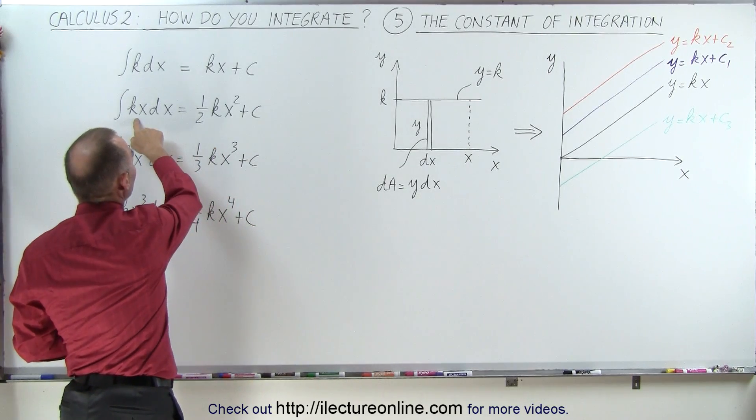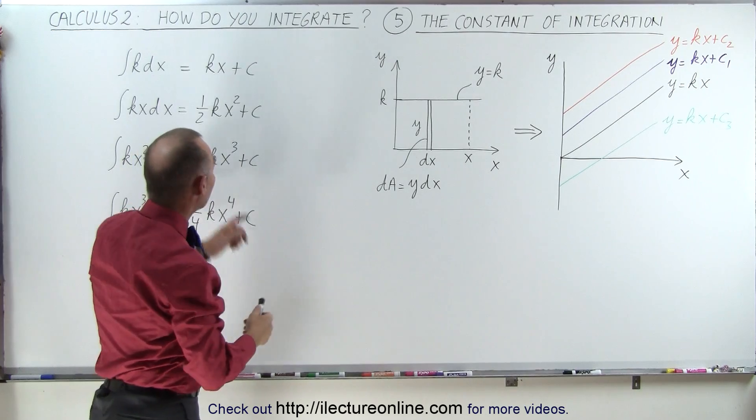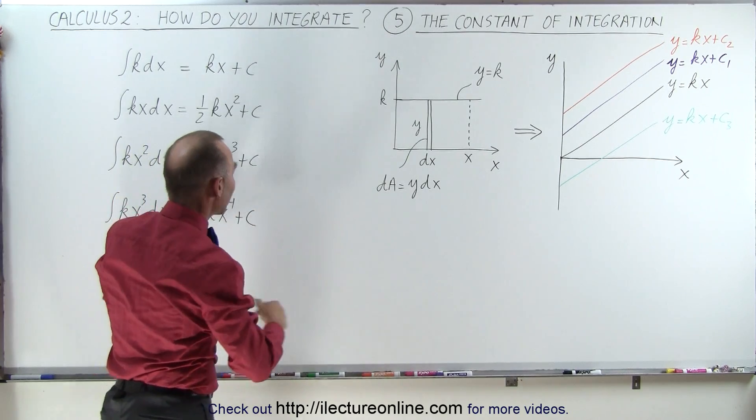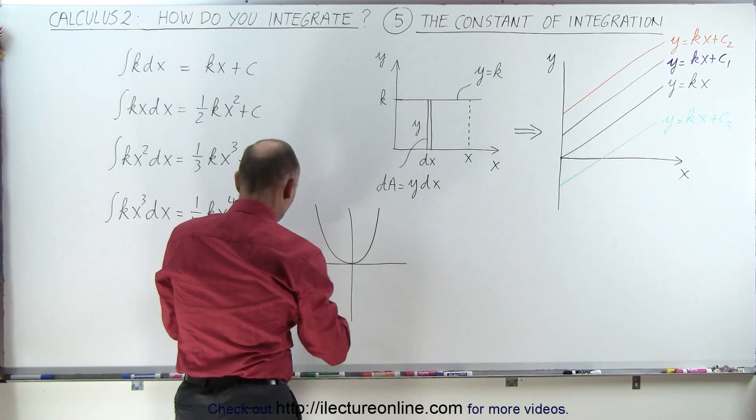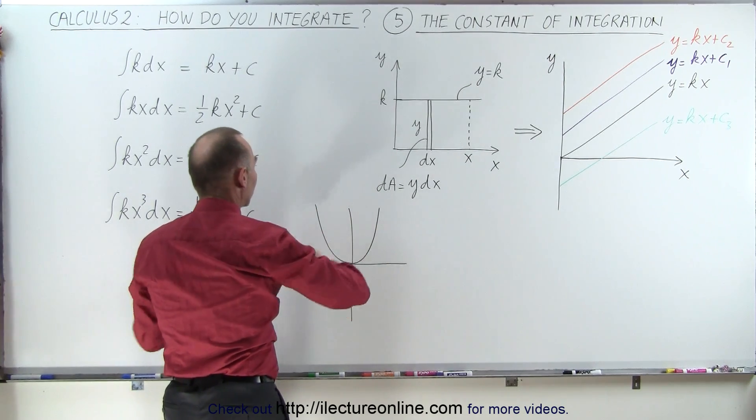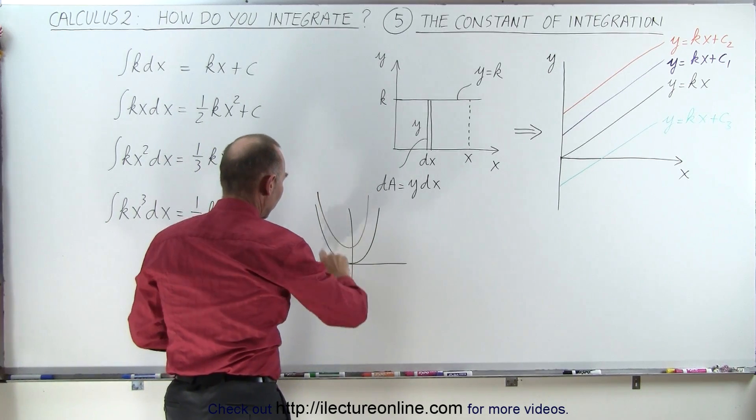Even when we integrate a first order equation, we end up with a second order equation. Again, notice when we draw one half kx squared, that is a simple parabola that looks like this. But it could be a parabola that looks like this, or it could be a parabola that looks like this.